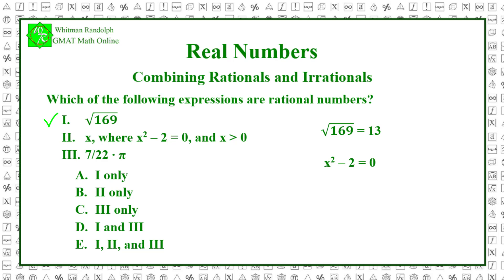If x squared minus 2 equals 0 and x is greater than 0, then x equals the positive square root of 2, which is irrational. So, choice 2 is irrational. Remember, 22/7 is only a rational approximation to pi. It doesn't equal pi. Therefore, choice 3 is irrational. So, the correct answer is A.